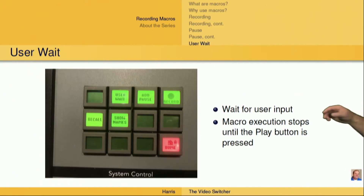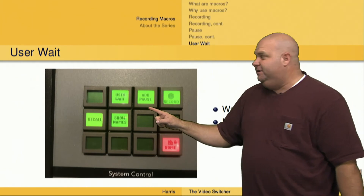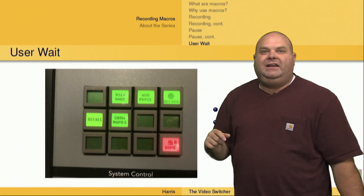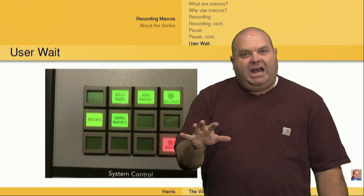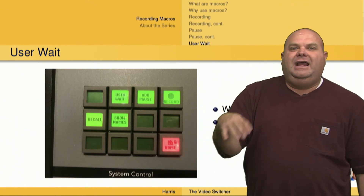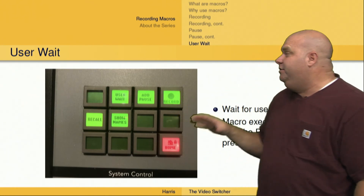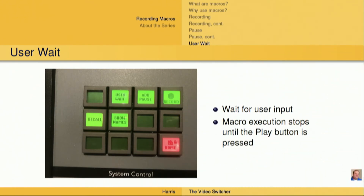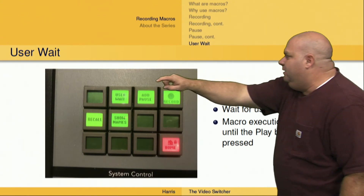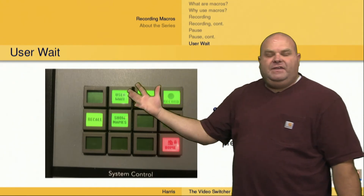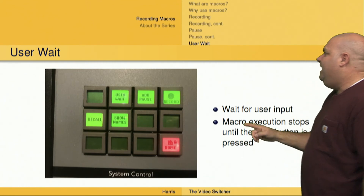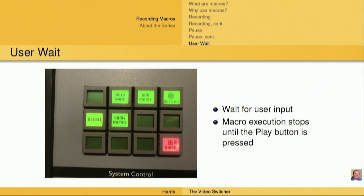We also have the ability to do a user wait. We can add a pause, which is what we just did, or we can add a user wait if we want the macro to stop and wait for user interaction, and then restart the macro as soon as we've performed those tasks. We push the user wait button, the switcher will respond and say that a user wait has been inserted. And then when that macro gets executed, it will stop execution, wait for us to do something, and then we just push the play button on that macro.